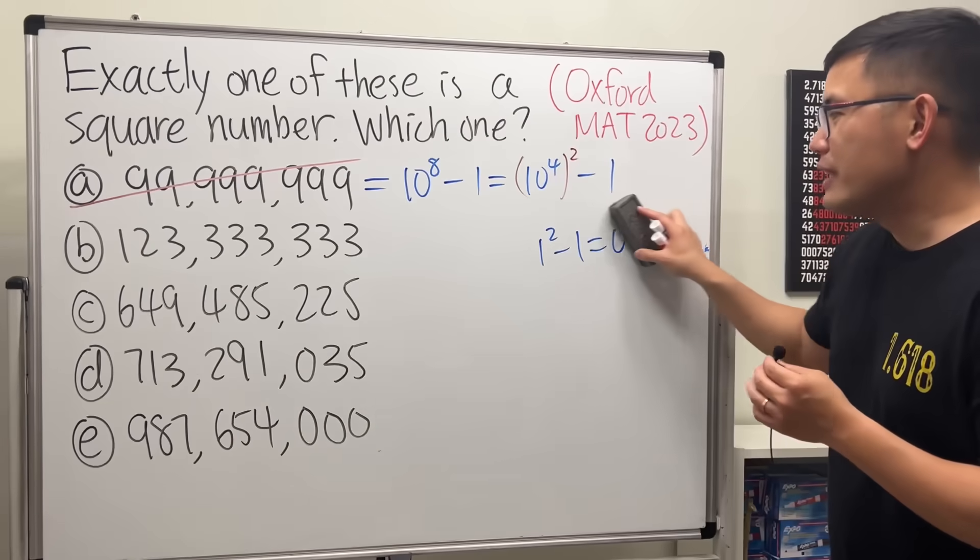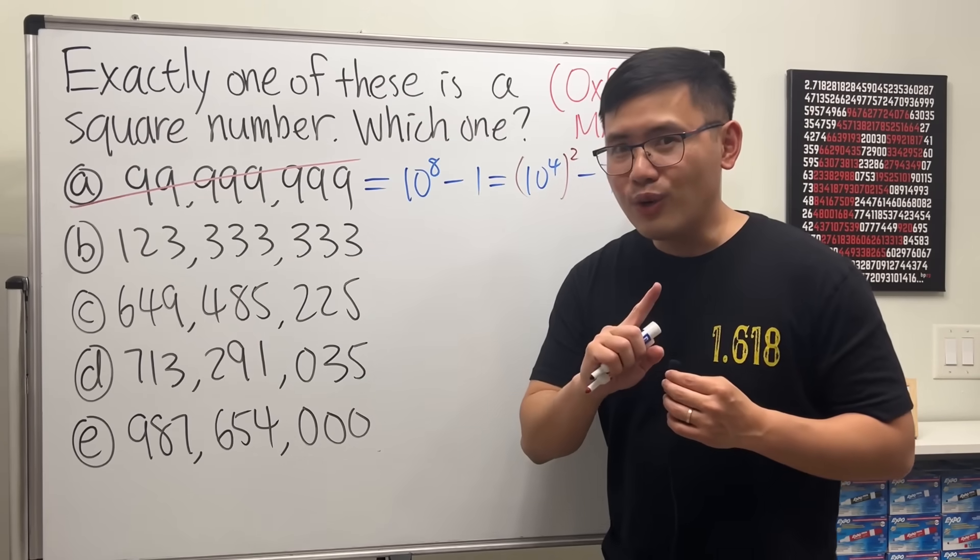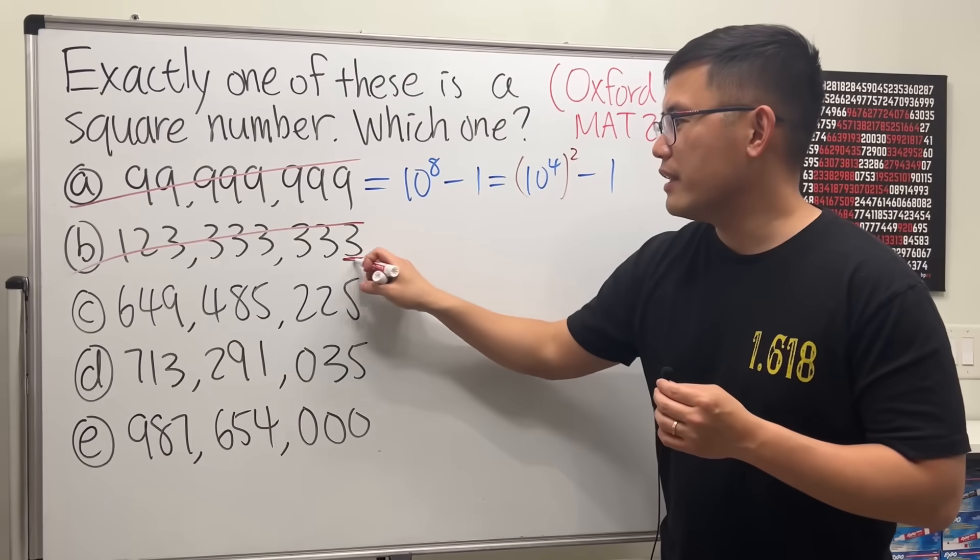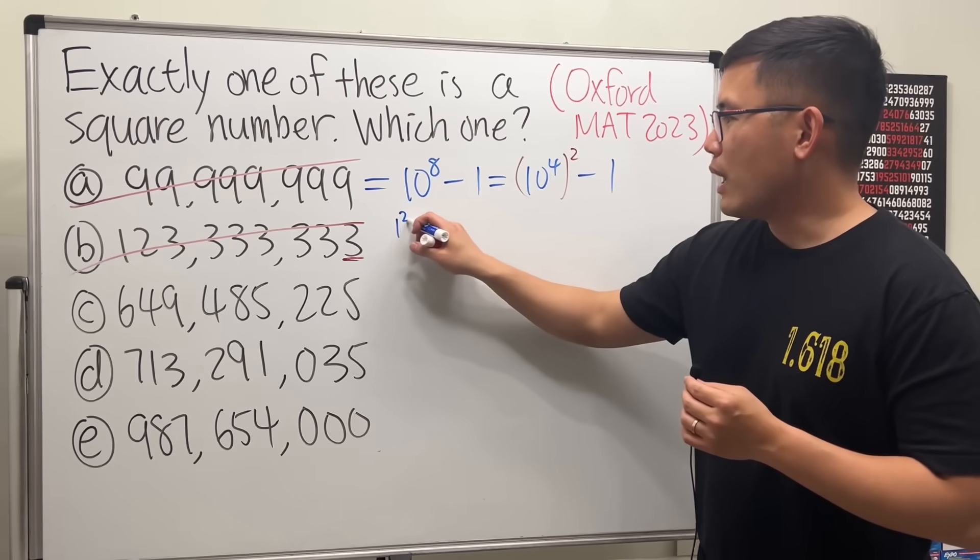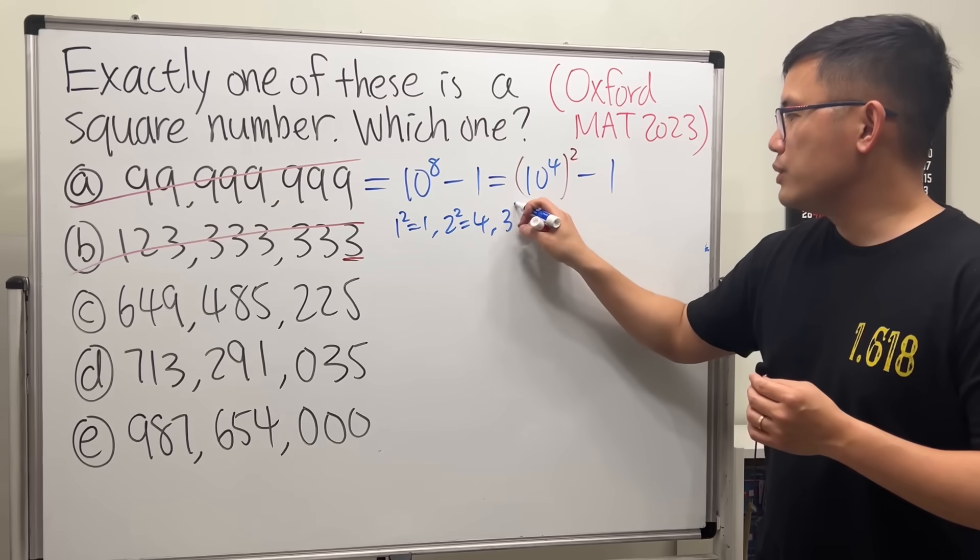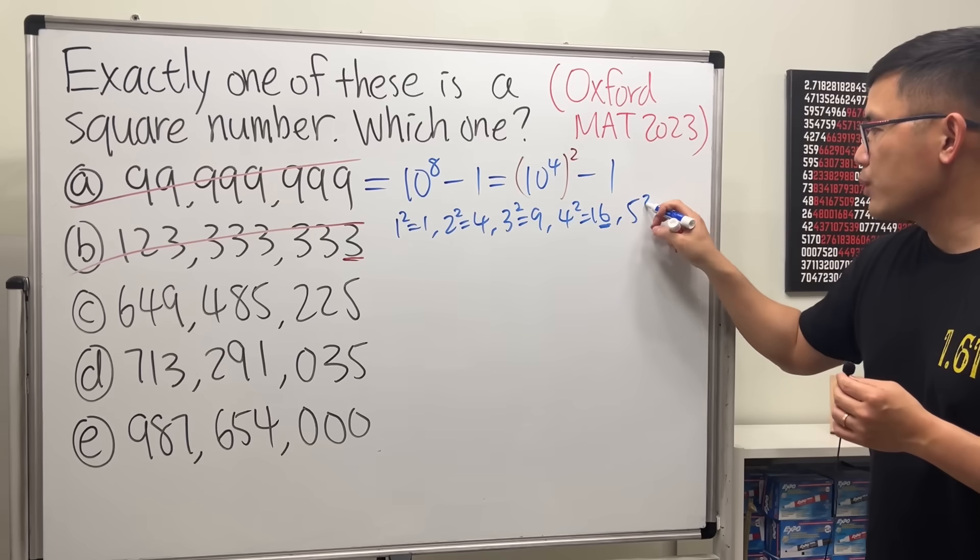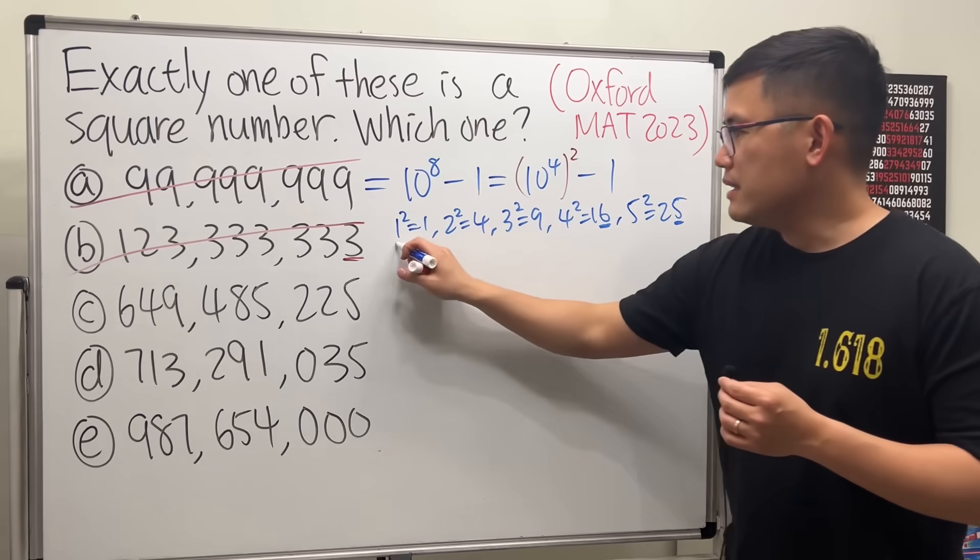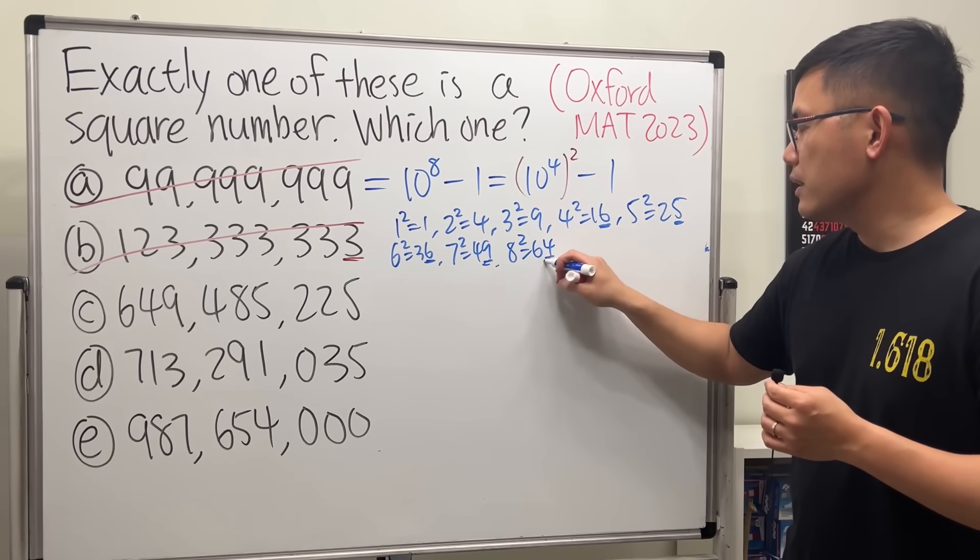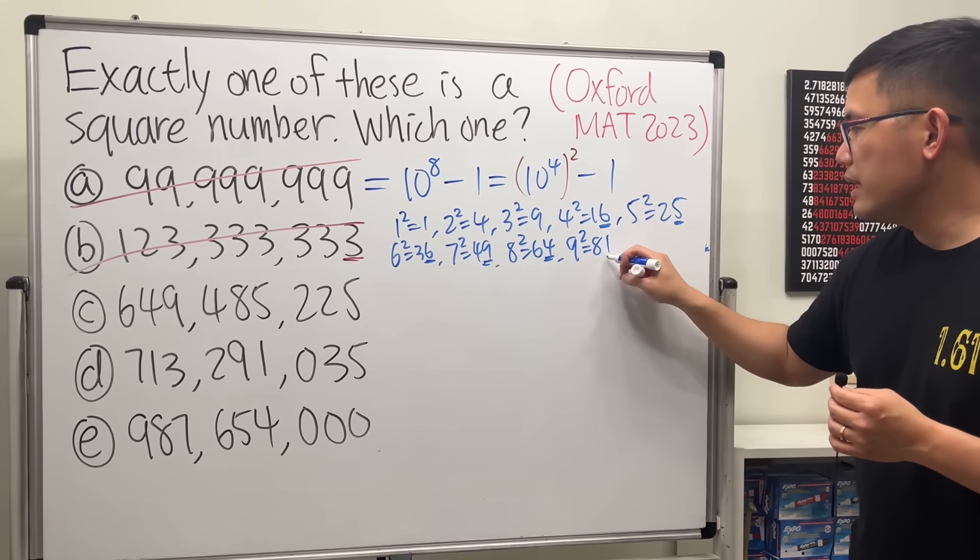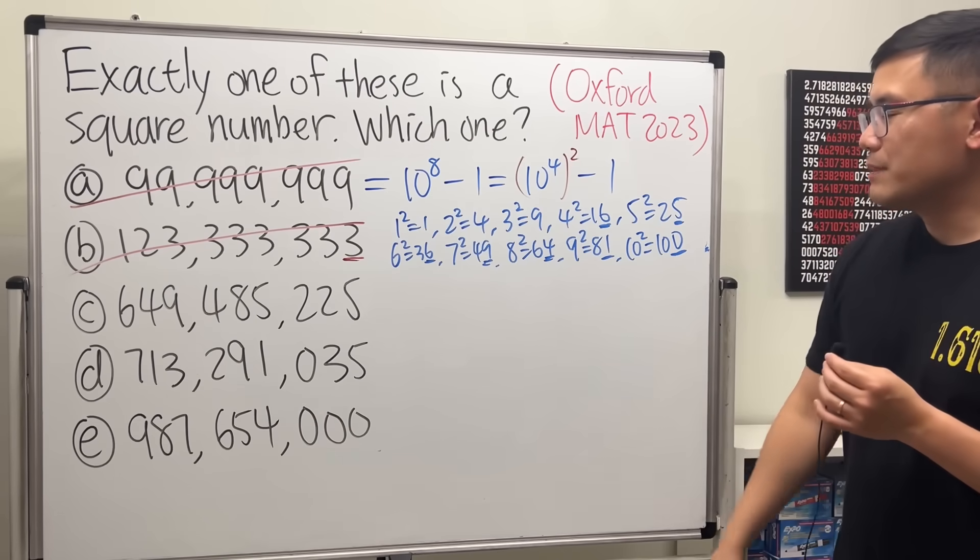Now option B, what do we think? Also a no, just get rid of it. And the reason is because we cannot have a perfect square that ends with three. Have a look, just pay attention to the unit digit. If you square one you get one, if you square two you get four, square three get nine, and then four squared we get 16 so you will end with a six. And then five squared we get 25, six squared is 36, seven squared is 49, eight squared is 64, and then nine squared is 81, ten squared is 100 ending with zero.